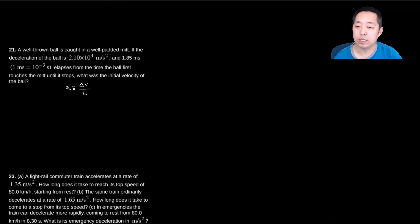delta V over T, but this time we know the acceleration, we know the time, we know the change in velocity. So we can solve for delta V equals A times T. The acceleration was 2.1 times 10 to the 4 meters per second.